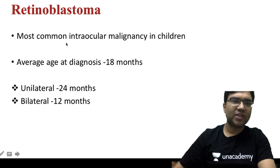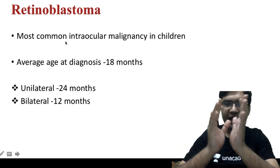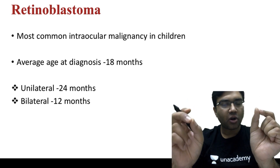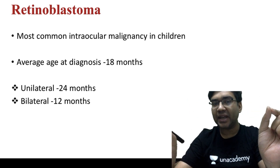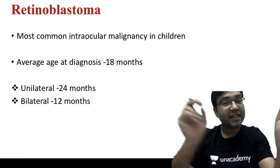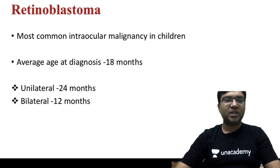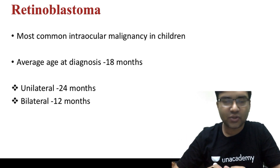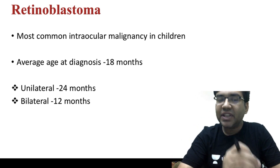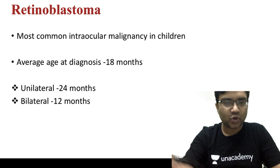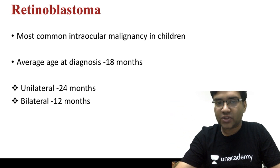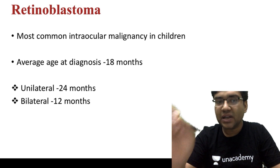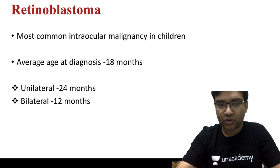Retinoblastoma is the most common intraocular malignancy in children. If they ask the most common primary intraocular malignancy in adults, remember it is uveal melanoma. The average age of diagnosis of retinoblastoma is 18 months — unilateral retinoblastoma averages 24 months, while bilateral retinoblastoma averages 12 months.